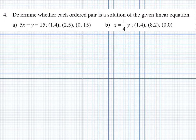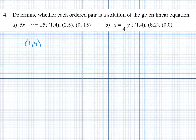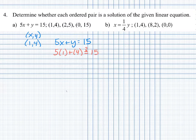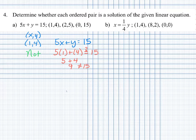We want to determine whether each ordered pair is a solution of the given linear equation. Our first linear equation is 5x plus y equals 15, and we're given three points to check. Let's begin by checking the point (1, 4): replacing x with 1 and y with 4, we get 5 times 1 plus 4, which is 5 plus 4 equals 9. That does not equal 15, so this is not a solution to the given linear equation.